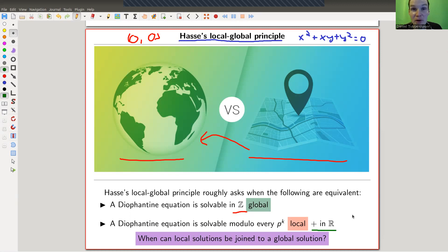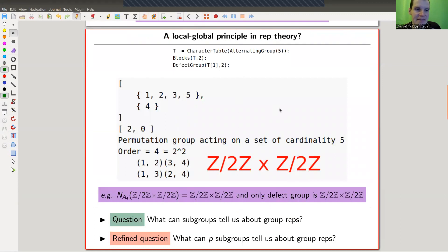When can local solutions be joined to a global solution? Turns out this is not always possible, only under certain circumstances. There's certainly no reason for it to work. Why should you be able to determine something global by just looking at your little map here? In general this is just not working. It's kind of always the point of those local-global principles to figure out under what circumstances this actually works.